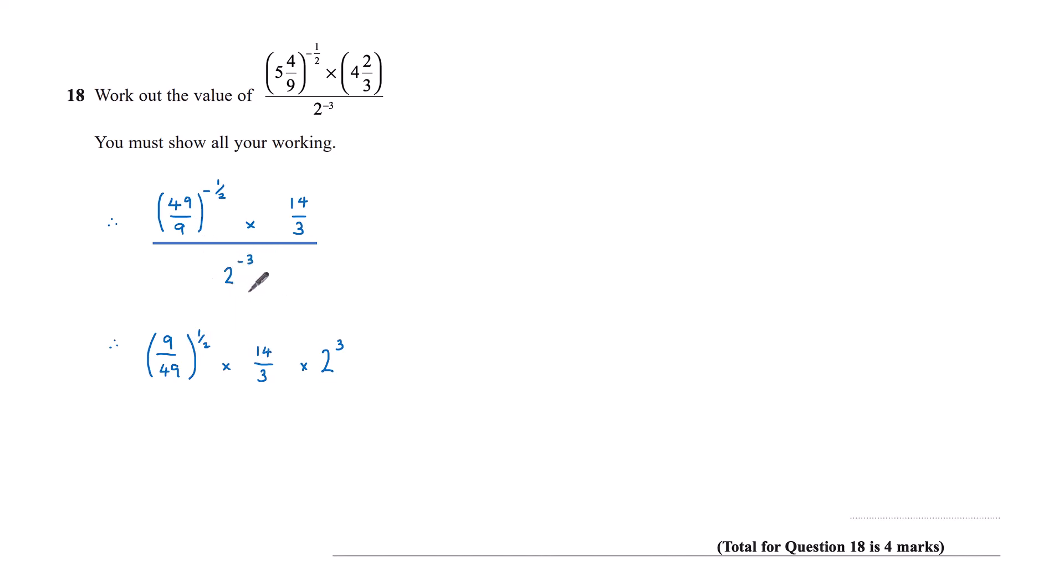And now on the denominator here, this would be 1 over 2 cubed. But if we're dividing by 1 over 2 cubed, that is the same as multiplying by 2 cubed.